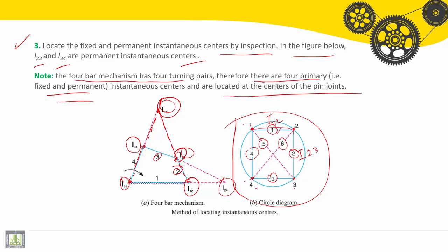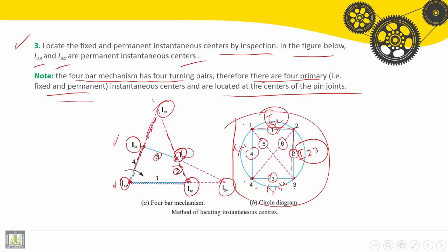So to find i(1,3), which is the fifth center, we draw the line through i(1,2) and i(2,3). Also, we draw the line through i(1,4) and i(3,4). The intersection of these two lines gives us i(1,3).